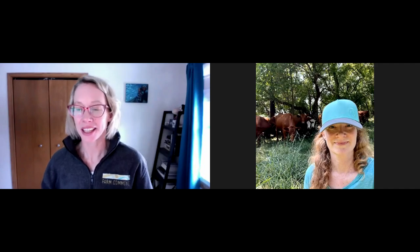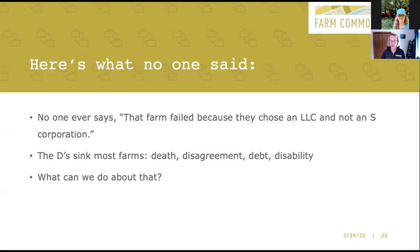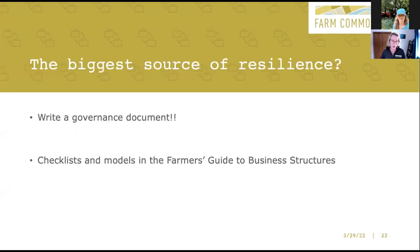Having the operating agreement has helped us preserve our friendship — that is what we're really going for here. When we're thinking about the things that take farm businesses down, it is the disagreements, people dying, disability, debt. The biggest source of resilience I can recommend today is: write that governance document. Getting the LLC and the S corporation is the easy part — focus on these issues that actually take down most of our businesses. Think about those questions: How do you get in? How do you get out? How do we share profits? How do we make decisions? We have complete checklists of issues to discuss, and models about how to put operating agreements or bylaws together. Bylaws for a corporation are just as important and usually required by the state.